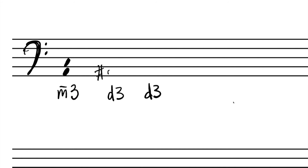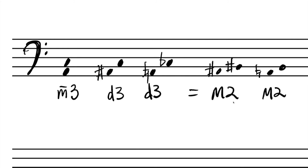There are two ways to create the diminished third: we could raise the bottom note, making it A-sharp to C-natural, or we could lower the top note, making it A-natural to C-flat. Those might sound a lot like whole steps to you — because they're enharmonically equivalent to major seconds. The difference is how we spell them.